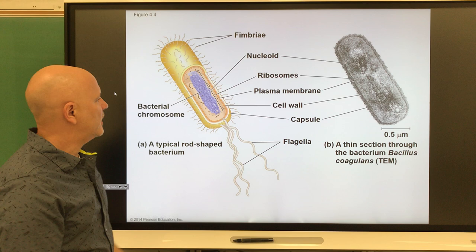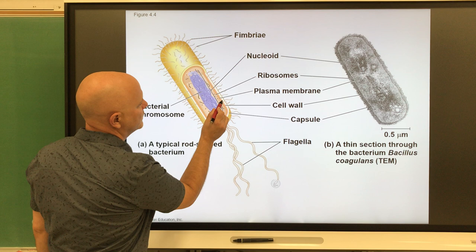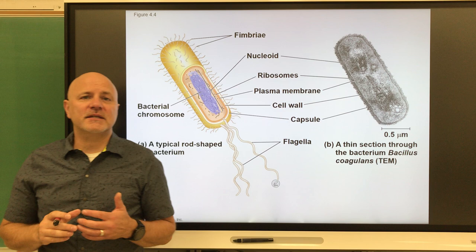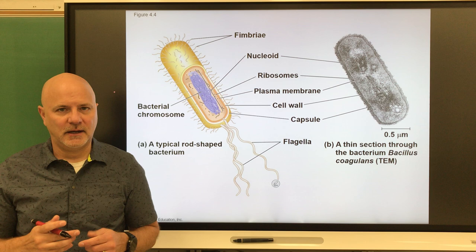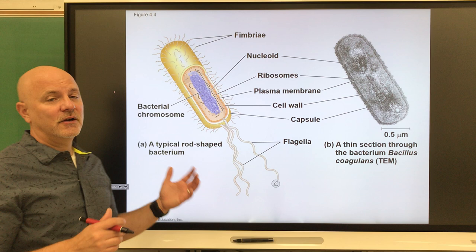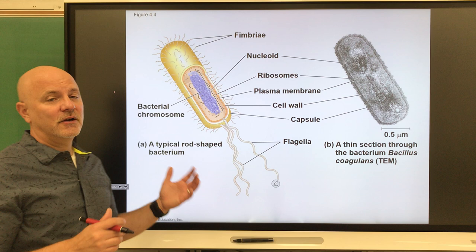Looking at the side of a prokaryotic cell, we see three layers. The first is the plasma membrane, and the second is the cell wall — a fairly rigid wall surrounding the plasma membrane that provides cell shape and protects the cell. Interestingly, most antibiotics work by preventing bacteria from making their cell wall, which makes them more susceptible to our immune defenses.